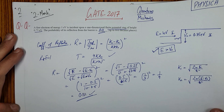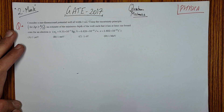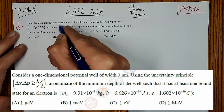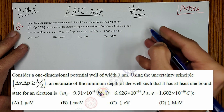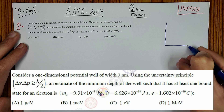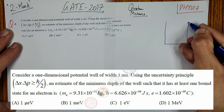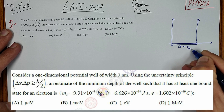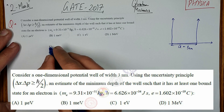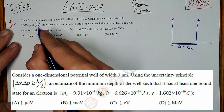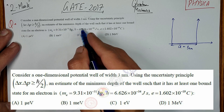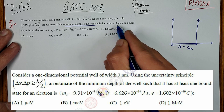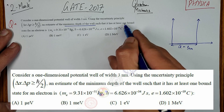One more question from GATE 2017 quantum mechanics, also two marks. Consider a one-dimensional potential well of width 3 nanometers. Using the uncertainty principle Δx·Δp ≥ ℏ/2, estimate the minimum depth of the well such that at least one bound state for an electron exists.